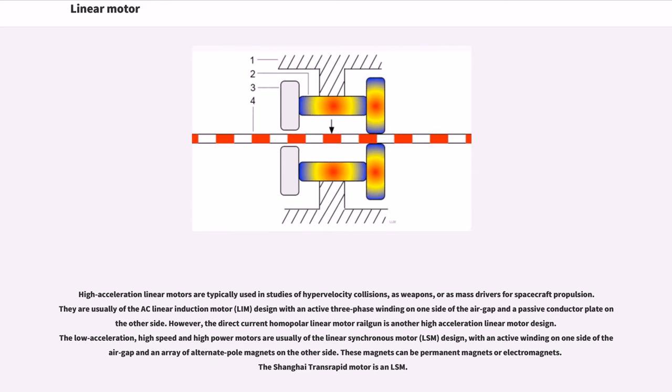High-acceleration linear motors are typically used in studies of hypervelocity collisions, as weapons, or as mass drivers for spacecraft propulsion. They are usually of the AC linear induction motor design with an active three-phase winding on one side of the air gap and a passive conductor plate on the other side. However, the direct current homopolar linear motor railgun is another high-acceleration linear motor design.